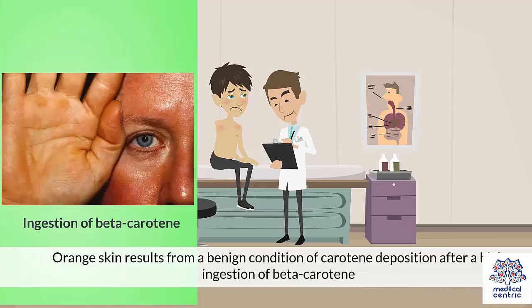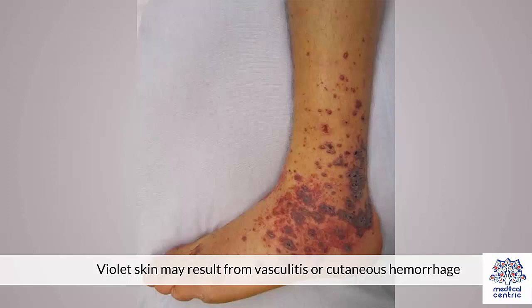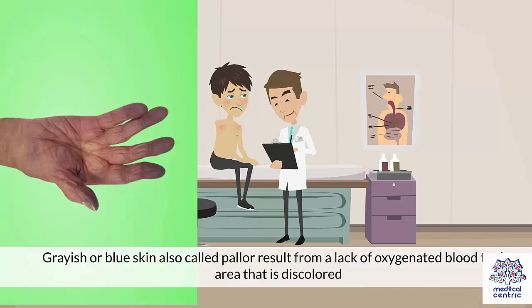Orange skin results from a benign condition of carotene deposition after a high ingestion of beta-carotene. Yellow skin results from jaundice. Violet skin may result from vasculitis or cutaneous hemorrhage. Grayish or blue skin, also called pallor, results from a lack of oxygenated blood to the area that is discolored.